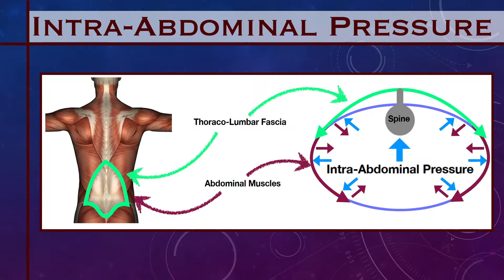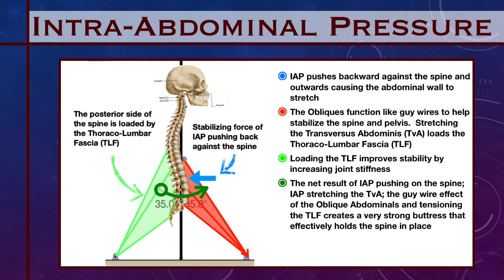So intra-abdominal pressure produces opposing braces for the spine from the front and from the back. This is the third mechanism by which the core provides spinal and pelvic stability — it comes from the internal and external obliques that attach directly to the pelvis and rib cage, creating a physical bridge much like guy wires holding the thorax upright on the pelvis. So we have three mechanisms: intra-abdominal pressure pushing back against the spine in blue, the abdominal wall loading the thoracolumbar fascia pulling the spine forward in green, and the guy-wire effect of the oblique abdominals in red.